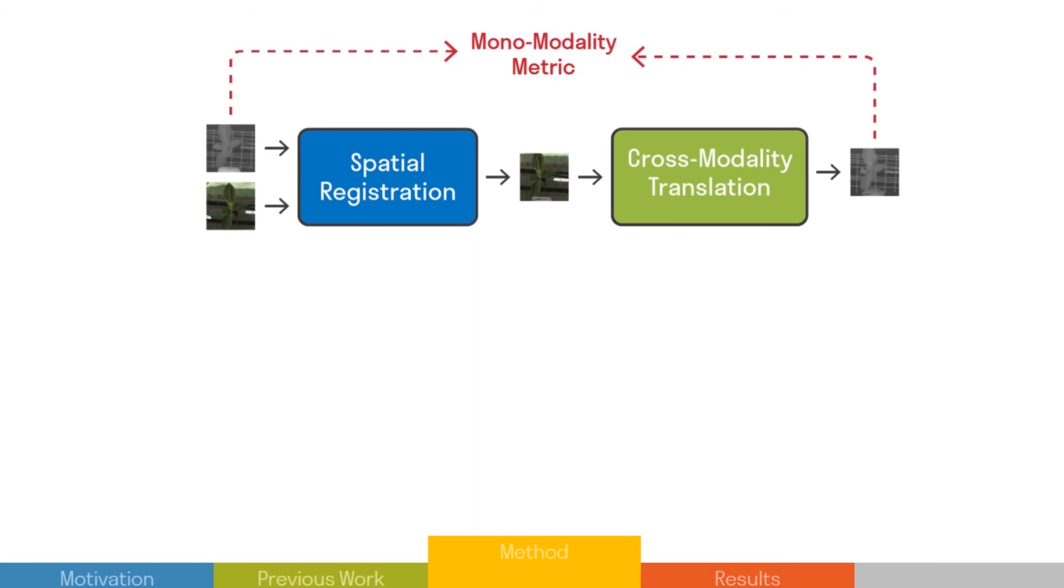The key challenge is training the translation network to apply only photometric transformation, while the registration network does the rest.